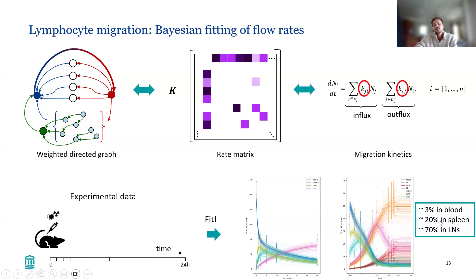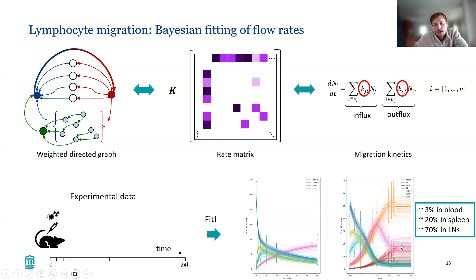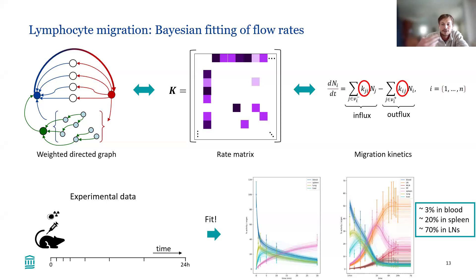If we do that, we observe that only about 3% of lymphocytes are in the blood at any given time — maybe 2% to 5% — whereas 20% are in the spleen and 70% are in lymph nodes. This already hints that blood may not be so important when looking at lymphocyte depletion following radiation, because even if you cause a drop in blood lymphocytes, this will be quickly restored by replenishment from the other compartments.